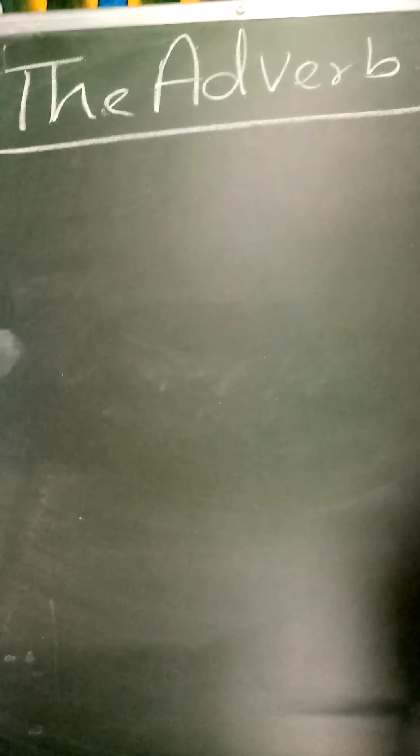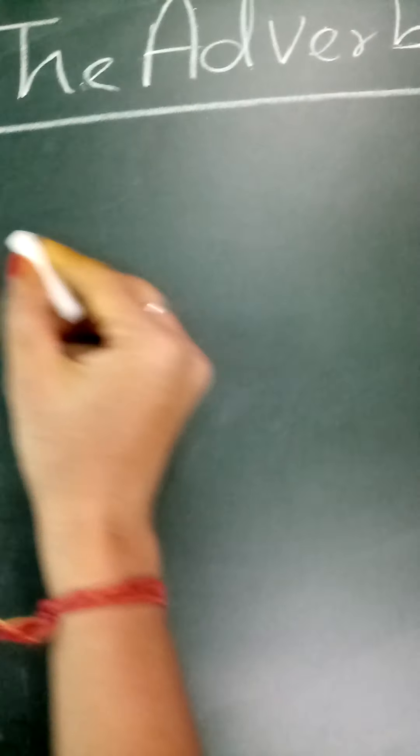Hello students! Today we will do adverb. So adverb kya hota hai? Adverb hota hai a word that adds to the meaning of a verb and tells us how a thing is done, when it is done. Yani, just look at the example first.